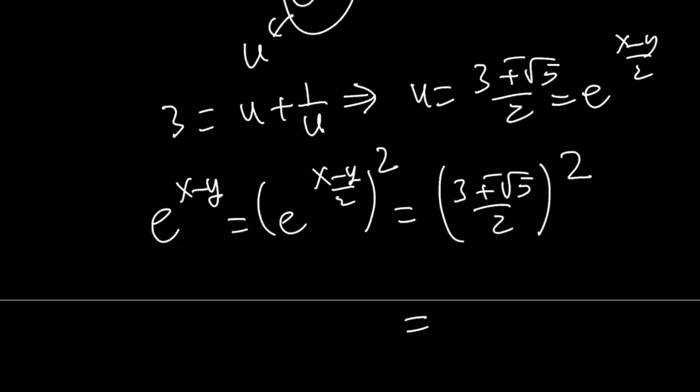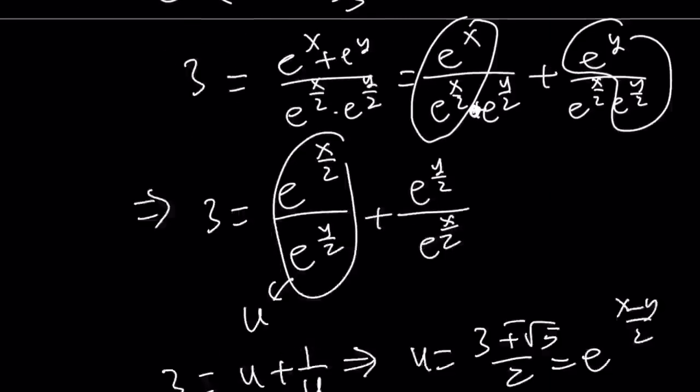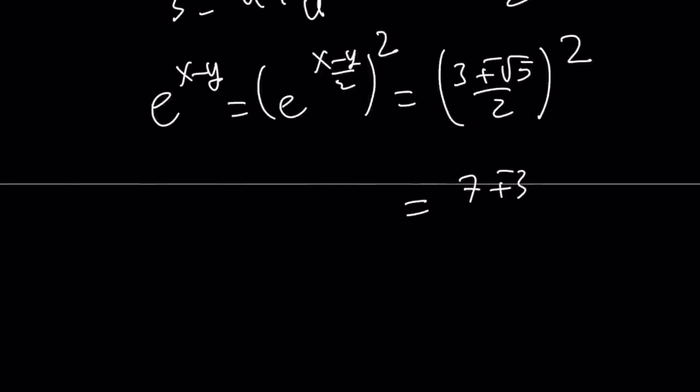And guess what that's going to give you? That's going to give you the same value that we got with the first solution, which is (7 ± 3√5)/2.